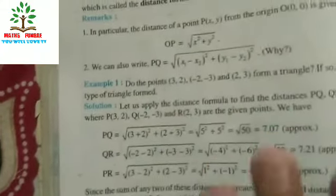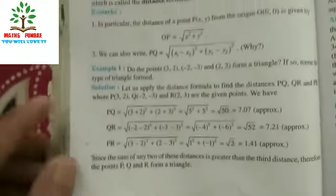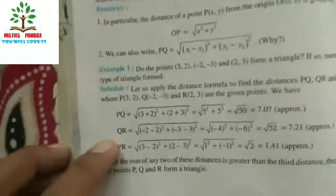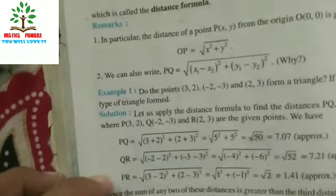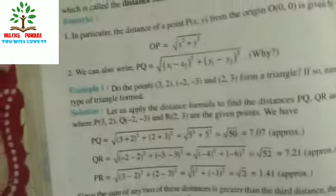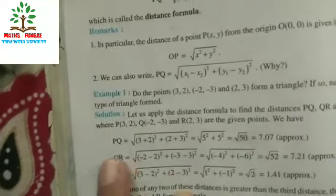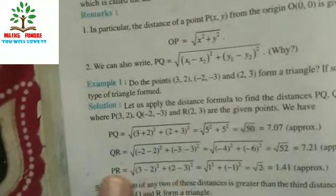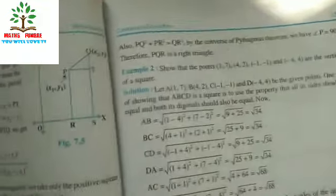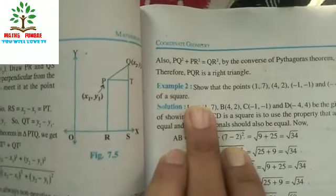To verify a triangle is formed, the sum of any two sides must be greater than the third side. PQ + QR > PR, QR + PR > PQ, and PQ + PR > QR — all conditions are satisfied, so a triangle is possible. Furthermore, PQ² + PR² = 50 + 2 = 52 = QR², which satisfies the Pythagorean theorem. Therefore, this is a right-angle triangle.